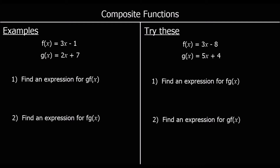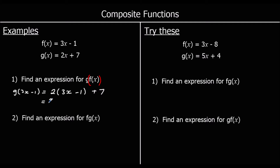Let's look at some examples. We've got two functions, an f function and a g function, and we're being asked to find an expression for gf of x — putting f into g. Our f function is 3x minus 1, so g of (3x minus 1) means changing x to 3x minus 1 in g. So it's 2 times (3x minus 1) plus 7. Expanding: 6x minus 2 plus 7, which is 6x plus 5. So gf of x is 6x plus 5.